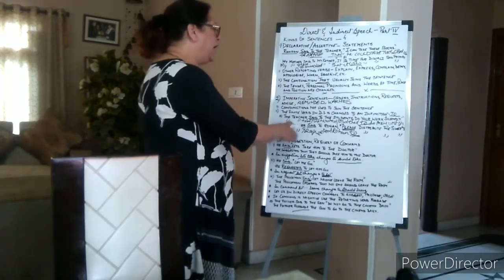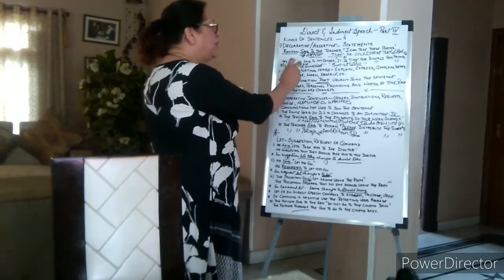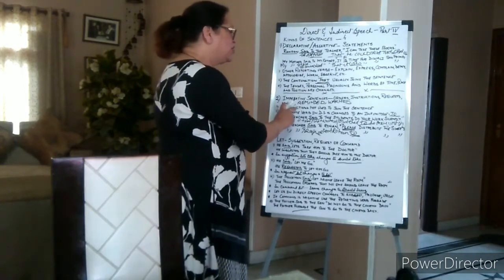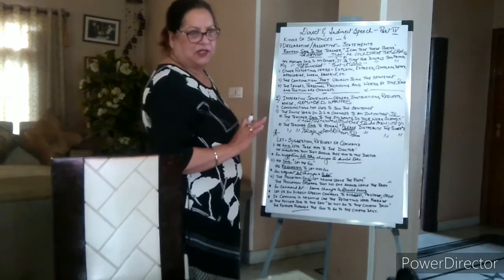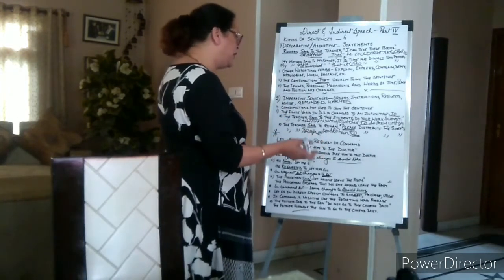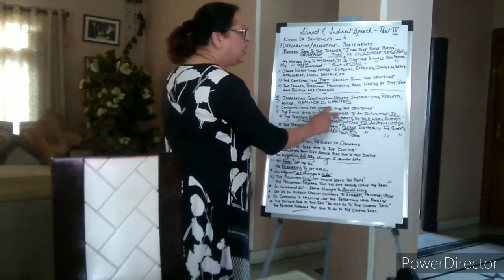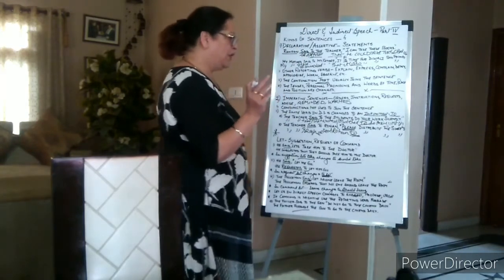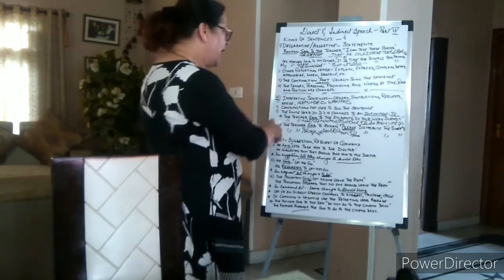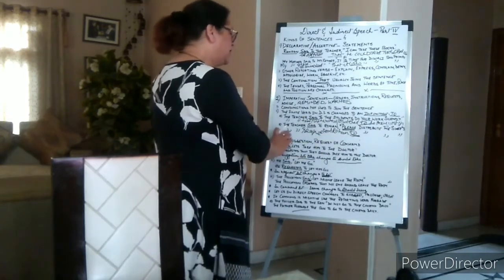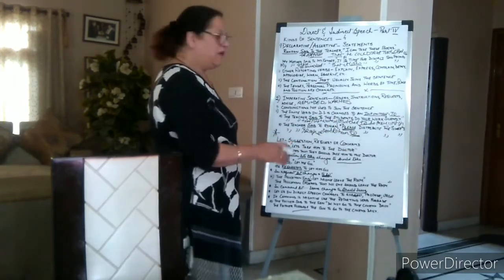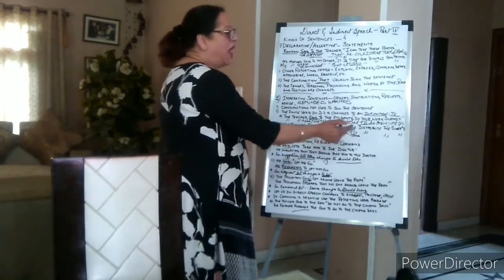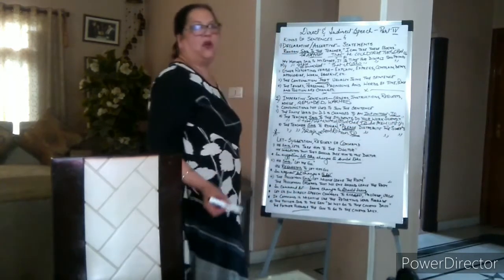In imperative sentences, conjunctions are not used to join the sentence — you join them directly. The finite verb in direct speech is changed to an infinitive, meaning 'to' (T-O). For example: 'Please distribute the sweets' becomes 'requested Rohan to distribute the sweets.' We have not used 'that' anywhere — 'that' is omitted and we use the infinitive 'to'.